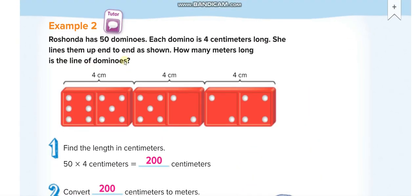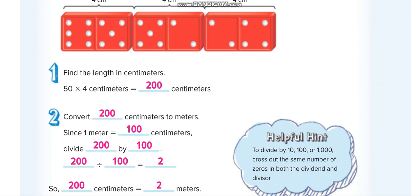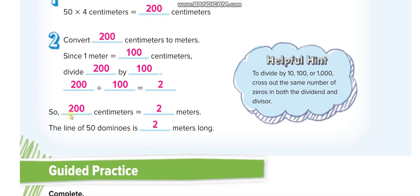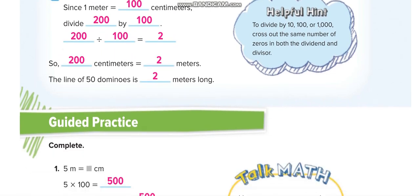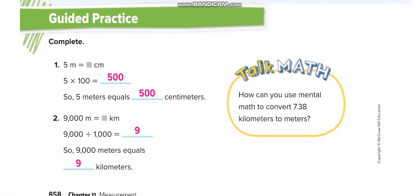Roshanda has 50 dominoes; each domino is 4 centimeters long. So 50 times 4 equals 200 centimeters. How many meters is this? One meter is 100 centimeters, so 200 centimeters equals 2 meters.